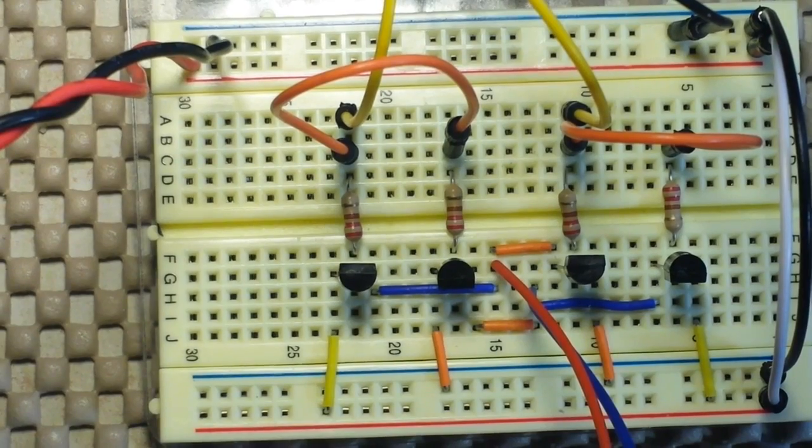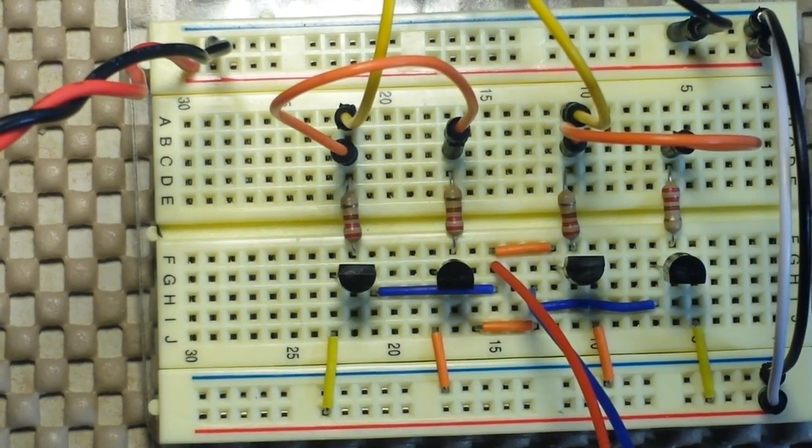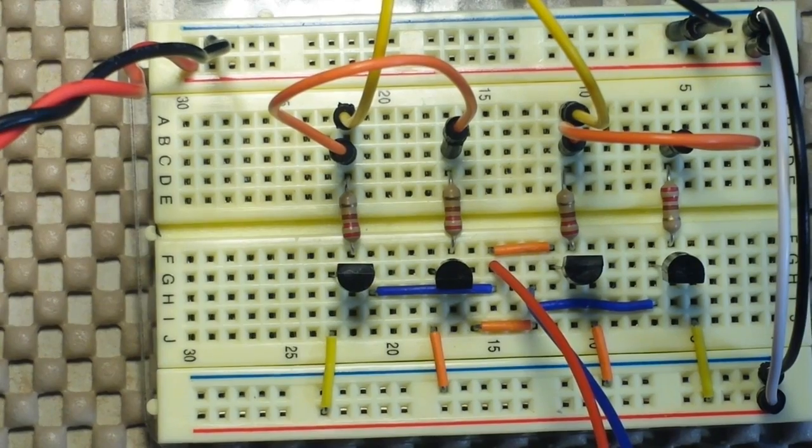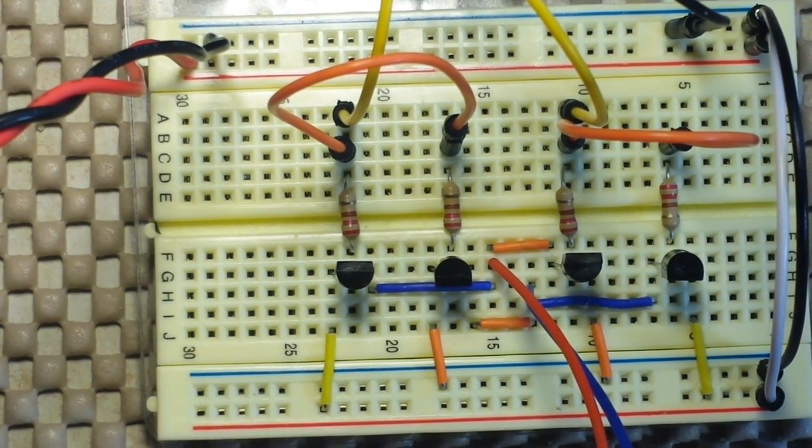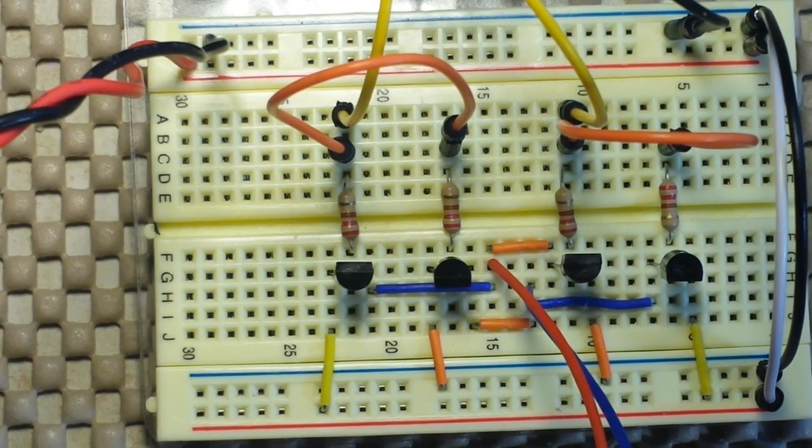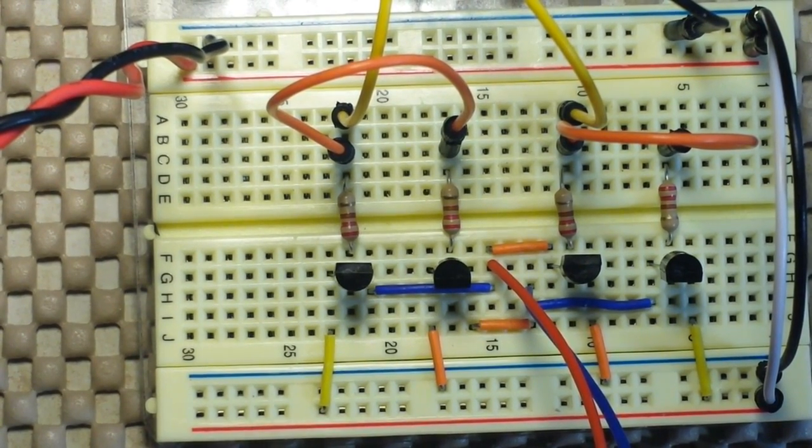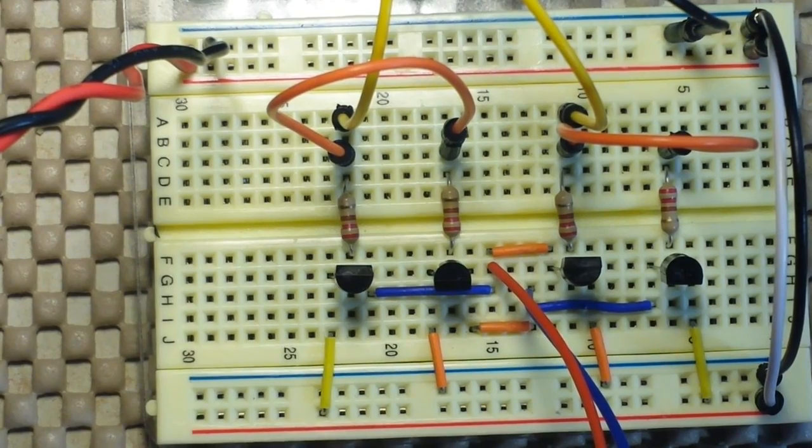So when we power up the Arduino, which we'll do here after I show you the code, it will turn the motor on in one direction for a couple seconds, pause for a couple seconds, and then turn it on in the other direction.